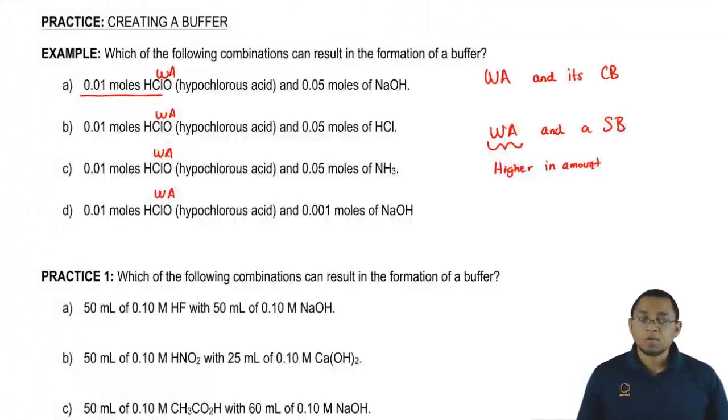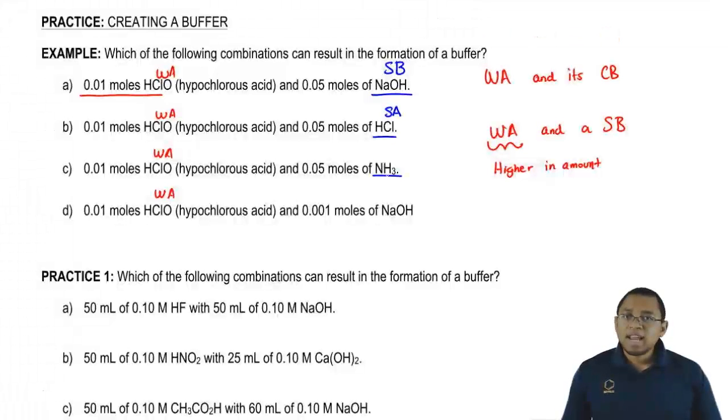So let's take a look at what's mixing with. Here we have NaOH, which is a strong base. Here we have HCl, which is a strong binary acid. Here NH3 is a neutral amine, so it's a weak base. NaOH, again, is a strong base.